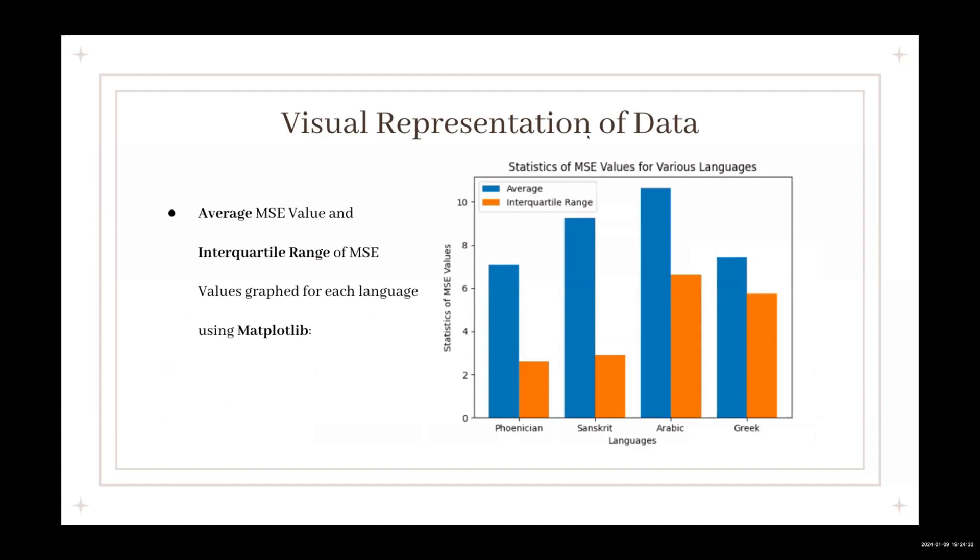And here's a visual representation of the data, which I created using matplotlib. It shows the average mean square error value and the interquartile range. Phoenician and Greek, the two Mediterranean languages had the lowest average value, while Phoenician had the lowest interquartile range.